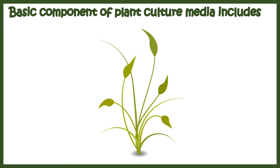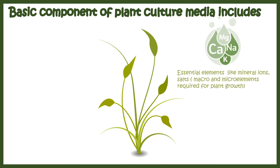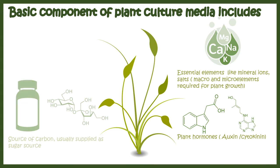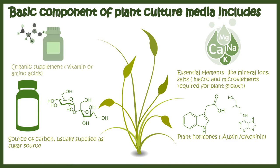The basic components of plant culture media include: all essential macro and micronutrients important for plant growth; plant hormones such as auxin and cytokinin and other hormones that help plant growth; a carbon source, generally sucrose; and a supply of organic elements such as vitamins and amino acids, which are important for anabolic responses in a plant. These four groups of factors are essential for plant growth in a tissue culture setting.